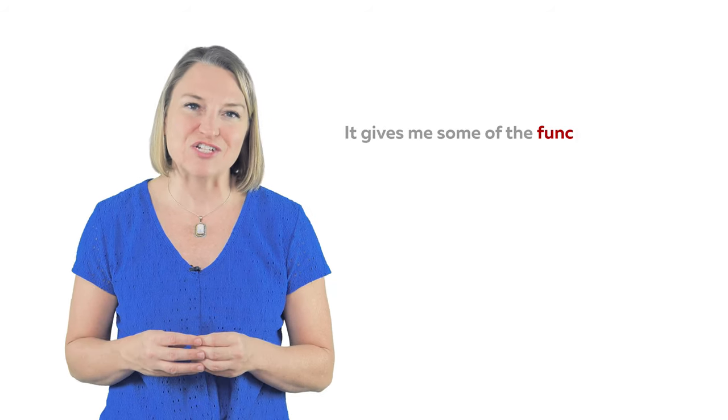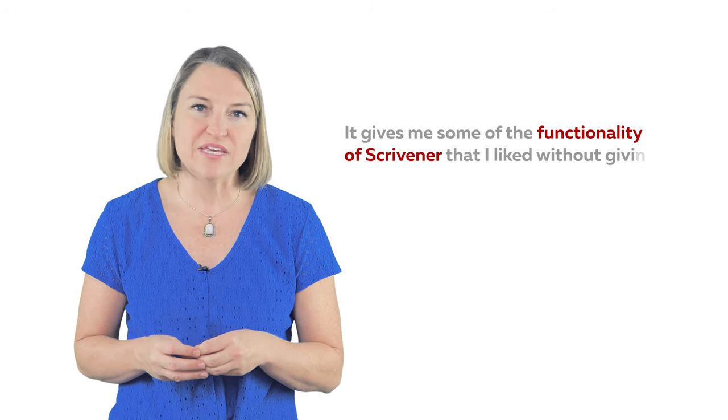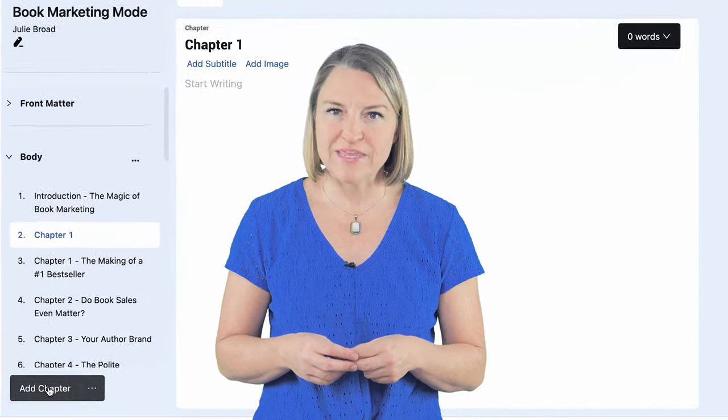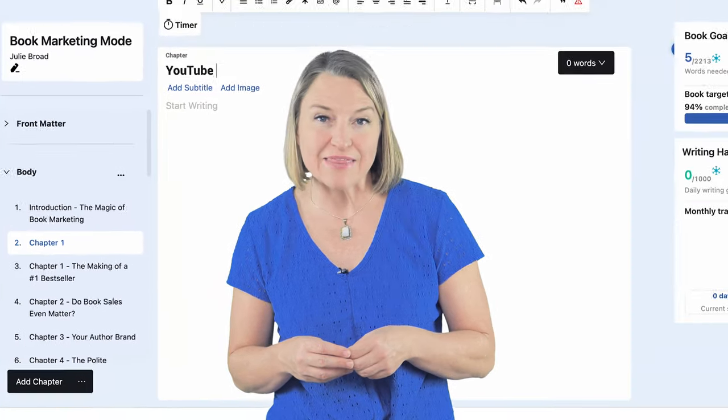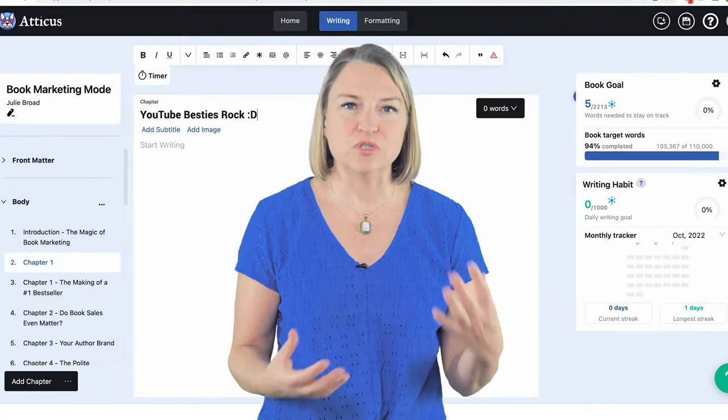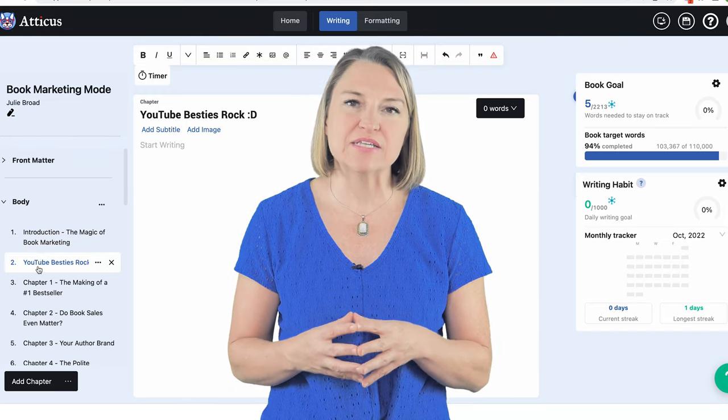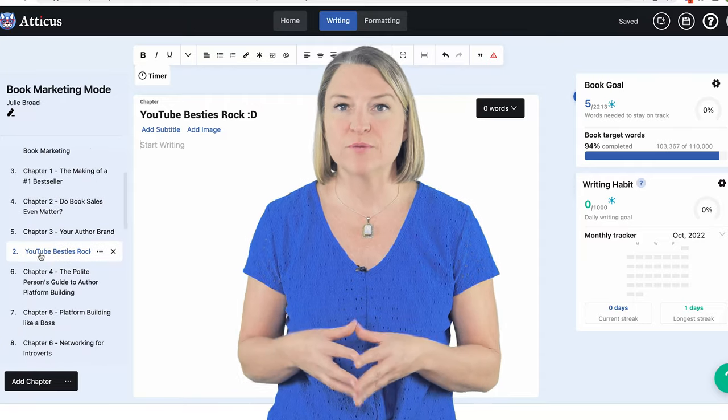Besides this super cute dog for an icon, it gives me some of the functionality of Scrivener that I liked without giving me the complications that made my head spin. Here, let me show you quickly what I mean. See these things on the left? They are chapters, so we can move them around, add a chapter, manipulate them. It gives you a visual look at your book the whole time. I really liked that versus being lost in the middle of a Word document. That's a lot like Scrivener.